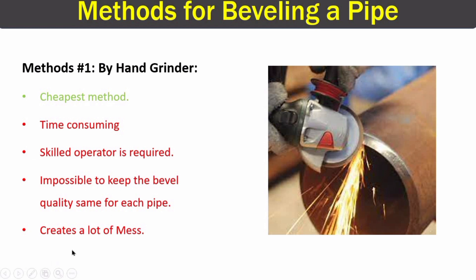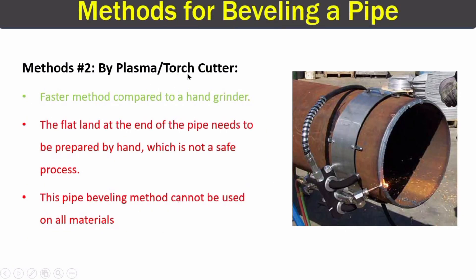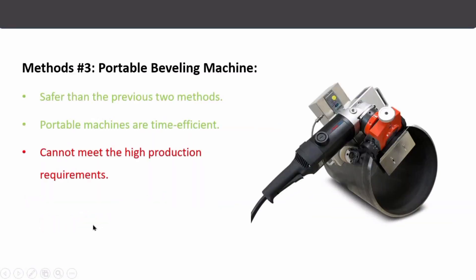This method also creates a lot of mess. The second method for pipe beveling is by a plasma or torch cutter. In this image you can see a plasma cutter cutting the bevel on a large diameter pipe. This method is a little bit faster than using a hand grinder. However, the end of the pipe will still need to be prepared by hand, which is a bit unsafe, and this method is not applicable for every material.